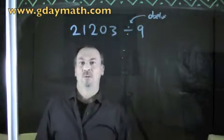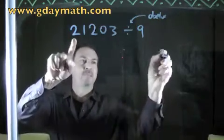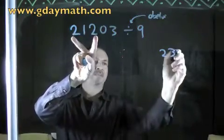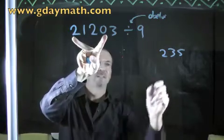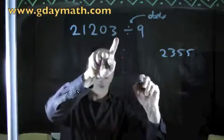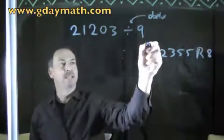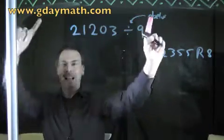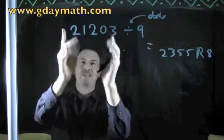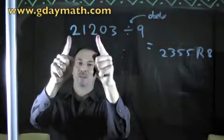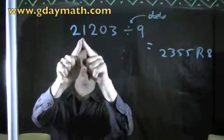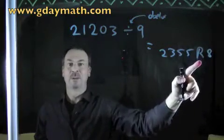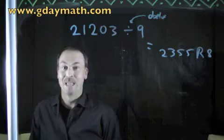What's 21203 divided by 9? Here's a strange rule. Look at the first number — just write it down: 2. Look at the first two numbers, 2 and 1, add them together and get 3. Look at the first three numbers: 2, 1, 2 adds up to 5. Then 2+1+2+0 is still 5. Then 2+1+2+0+3 is 8 — write that as remainder 8. The answer is 2355 with a remainder of 8. I claim: to divide a number by 9, read the number from left to right and work out the partial sums — 2, 3, 5, 5 — string them down in order, and the last one becomes the remainder.